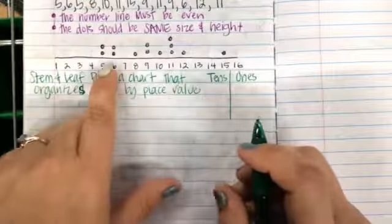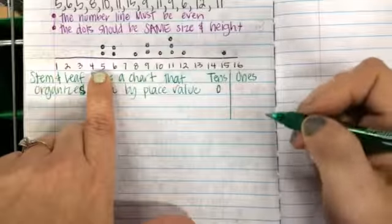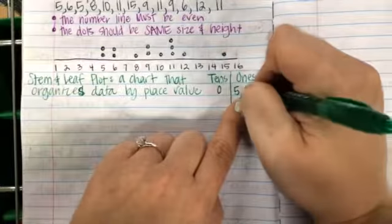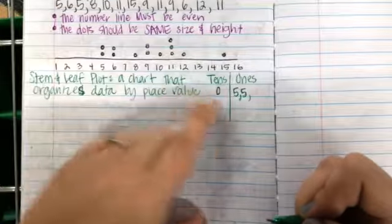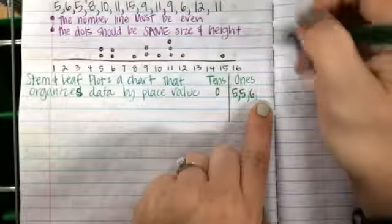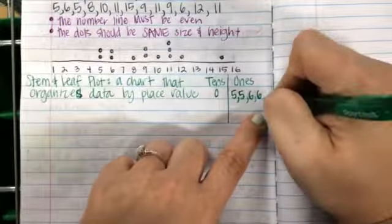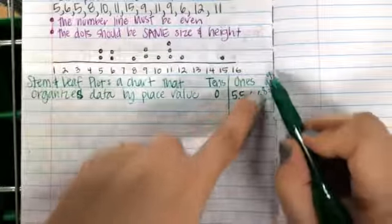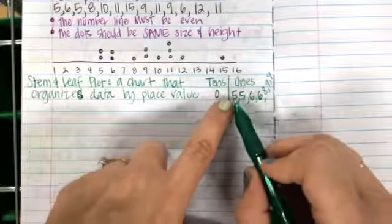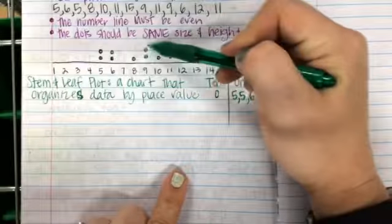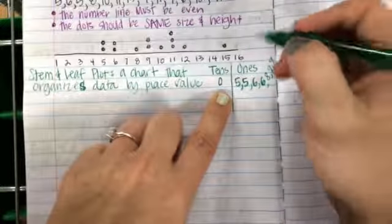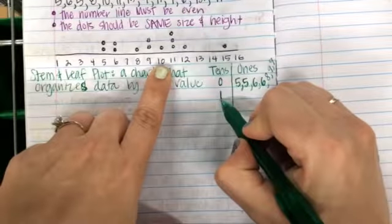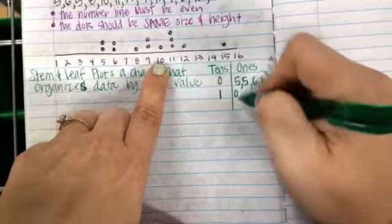For the value five: zero in the tens place, five in the ones. Another five: zero tens, five ones. Then six: zero tens, six ones. Then six again, eight, nine, and nine. So for all zero-tens values, my data is 5, 5, 6, 6, 8, 9, 9. For the tens value of one: the number ten has a 1 in the tens place and a 0 in the ones. Then eleven has a 1 in the tens and a 1 in the ones.